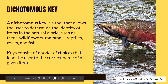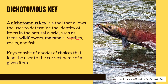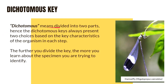A dichotomous key is a tool that allows the user to determine the identity of items in the natural world — in our case, trees, wildflowers, mammals, reptiles, and fish. We even have dichotomous keys for classification of rocks. Dichotomous keys consist of a series of choices that lead the user to the correct name of a particular organism. The word dichotomous means divided into two parts — 'di' means two — hence the dichotomous key always presents two choices based on the key characteristics of the organism in each step.